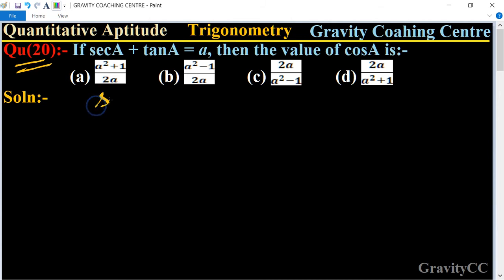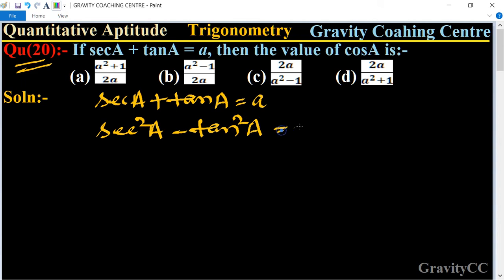For this question, sec A + tan A is given as a, and we need to find cos A from this. We know that sec²A - tan²A = 1.